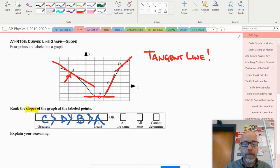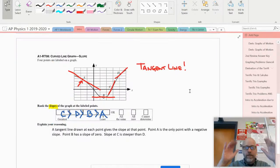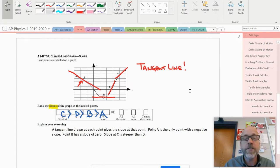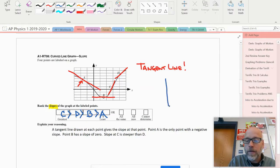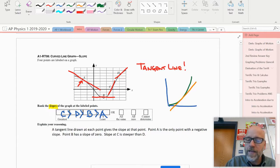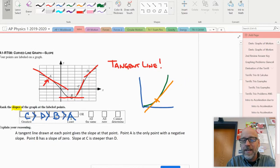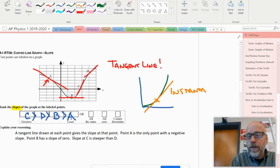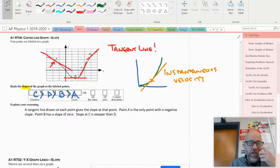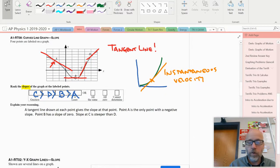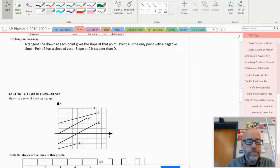Push pause and explain the reasoning. That's what I got: a tangent line drawn at each point gives the slope at that point. For a position graph, this would be the instantaneous velocity. In class when we talked about an object that was accelerating, we could draw in a tangent line and find the instantaneous velocity. Point A is the only point with a negative slope, point B has a slope of zero, and the slope at C is steeper than D.